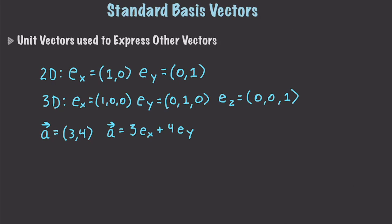You're also going to see them in the form of E1 and E2. They're sometimes represented with the letters I, J, and K, and also X, Y, and Z.